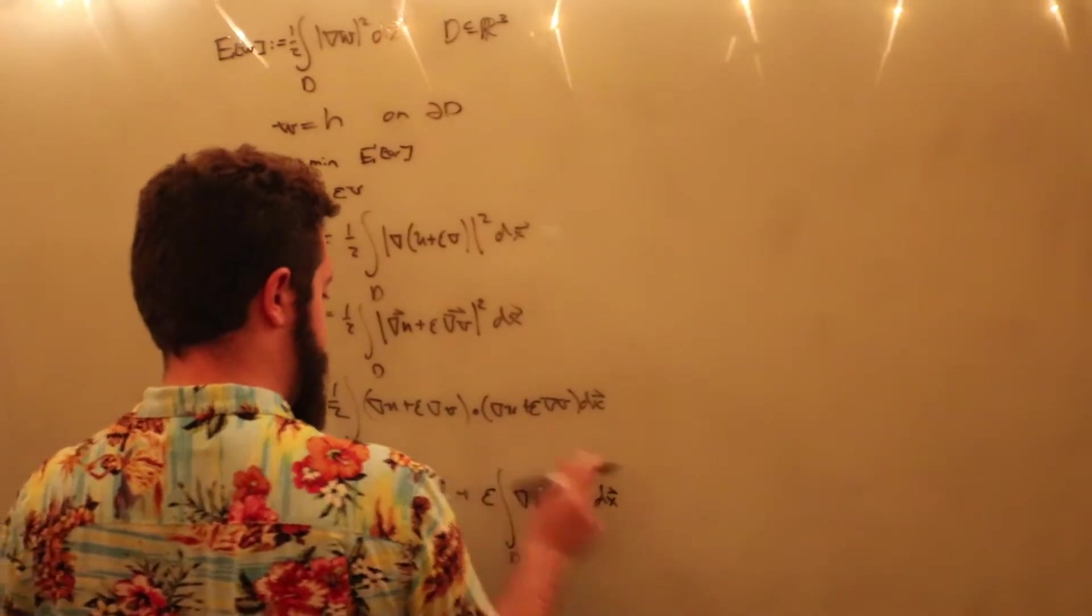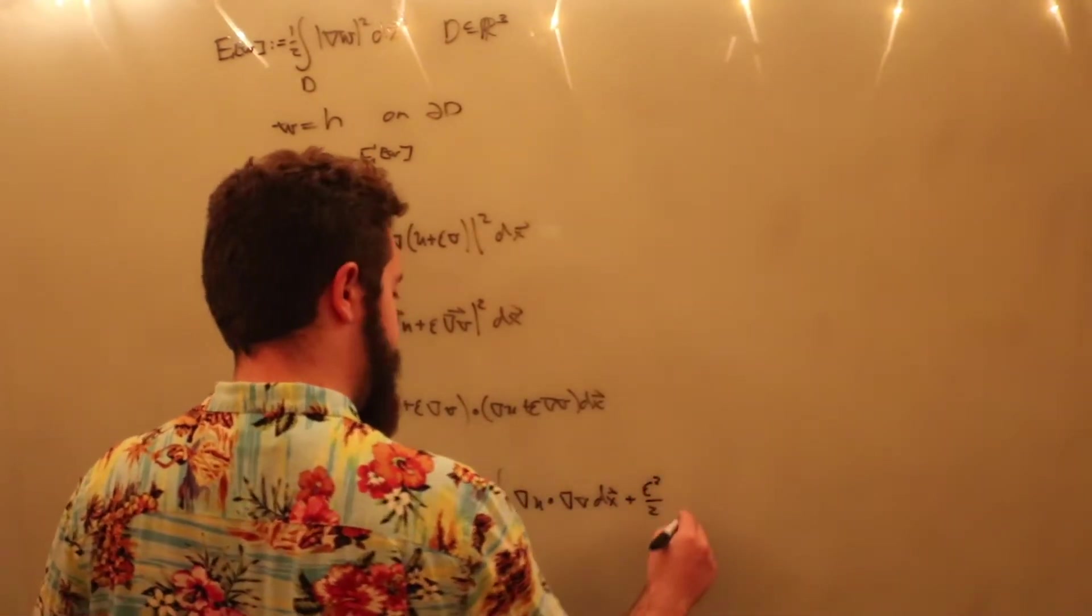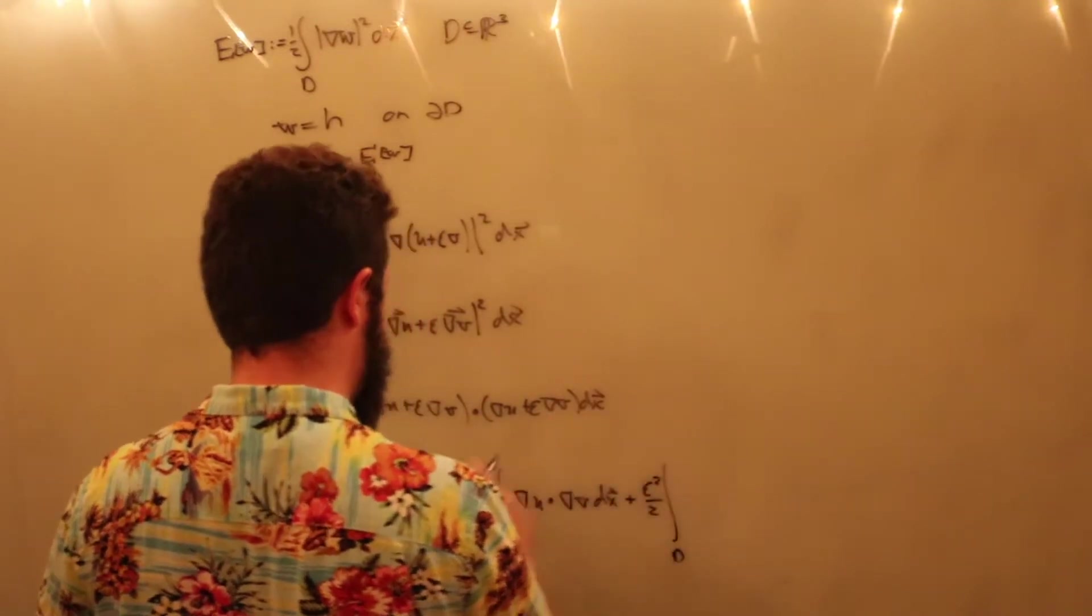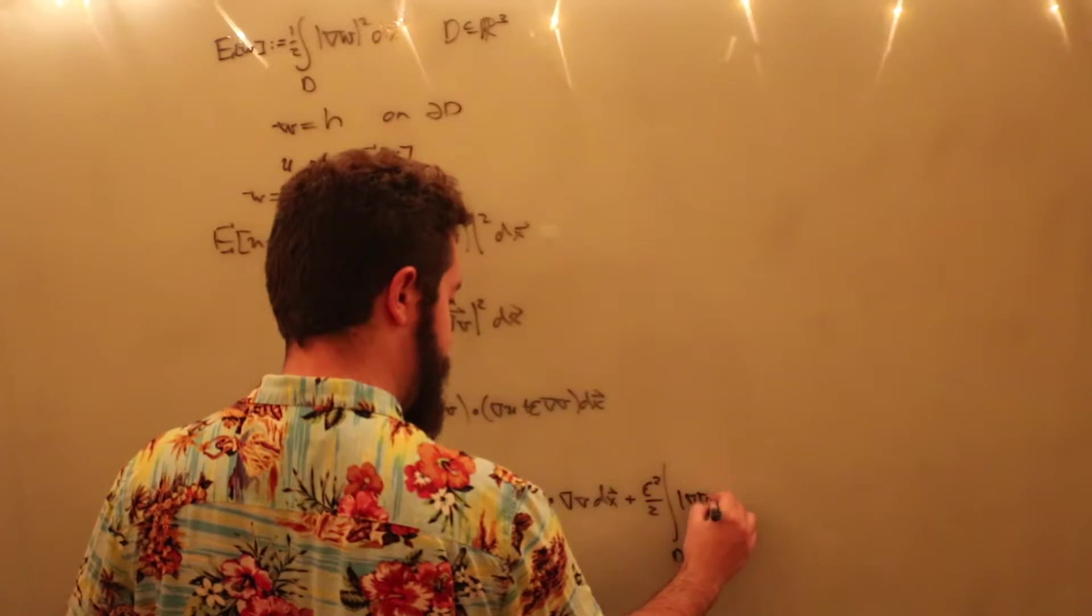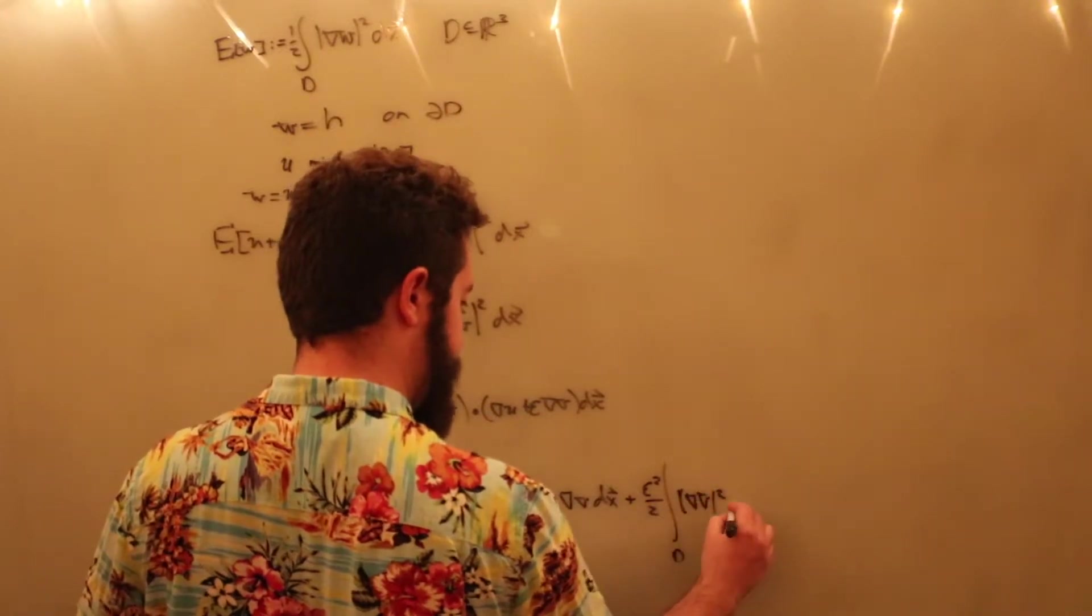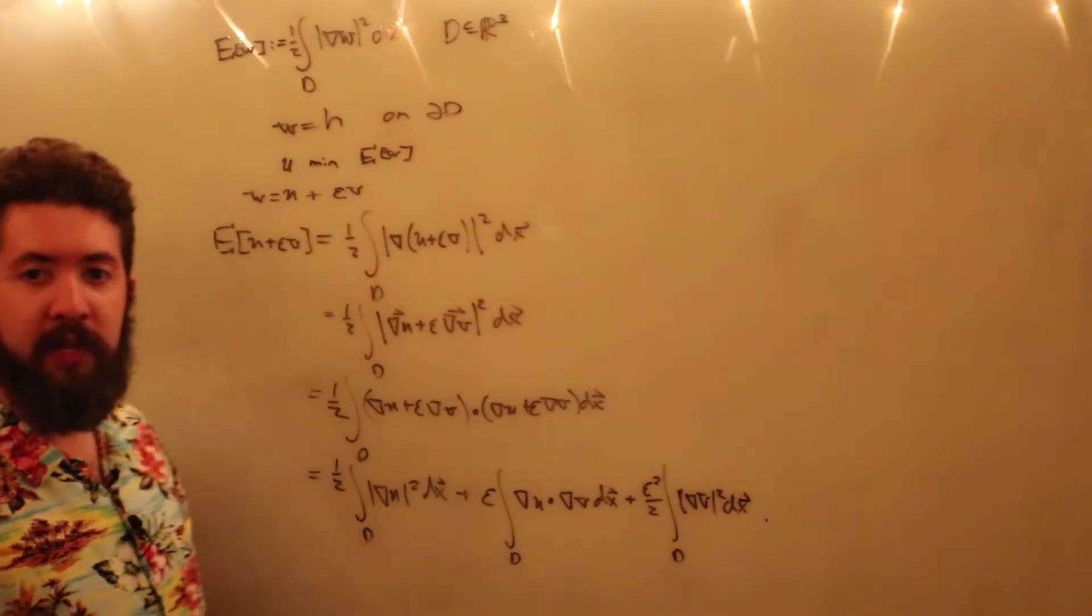And it's just going to be plus epsilon integral over d of grad u dotted with grad v dx. And then the last bit is going to be plus epsilon squared over two times the integral over d of grad v magnitude squared, or grad v dotted with itself. Alright, so this is what we have so far.